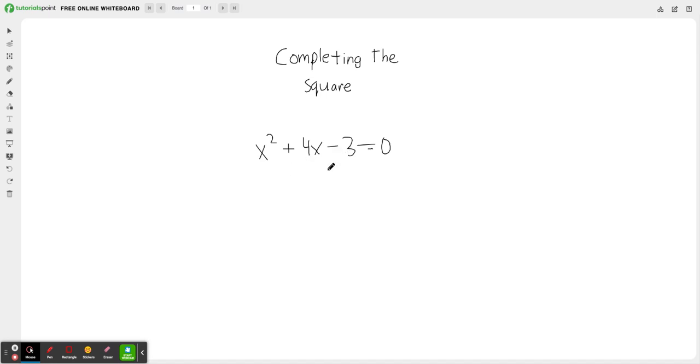So what you do is you first add the 3 to both sides. You want to move any constants over to the right side of the equation. You have your x squared plus 4x equals 3.